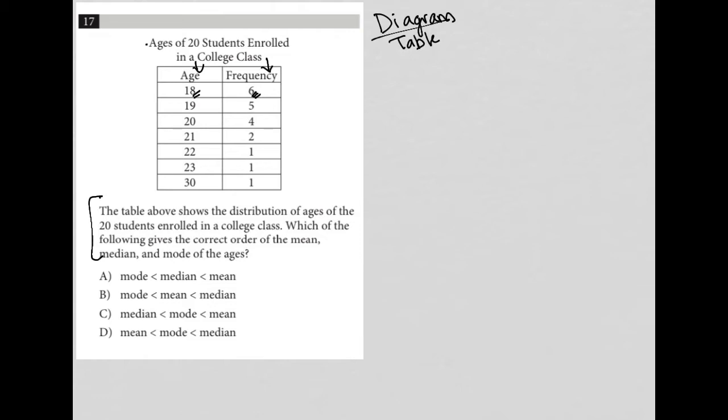Which of the following gives the correct order of the mean, the median, and the mode of the ages? The easiest one of these to find is actually going to be the mode, so let's start there.